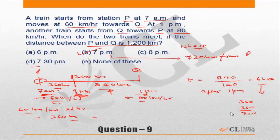It could also be what distance from Q will they meet? The speed of the train from Q is 80 km per hour and it is meeting 6 hours after starting. So at the rate of 80 km per hour in 6 hours it will do 8 into 6 is 480 km. So it will meet 480 kilometers from Q.